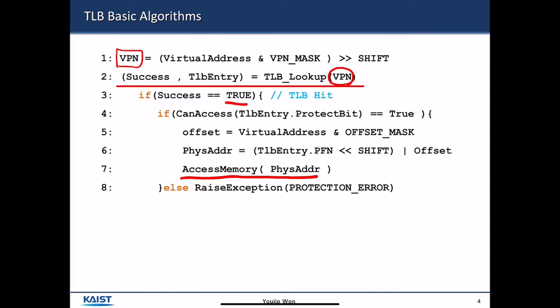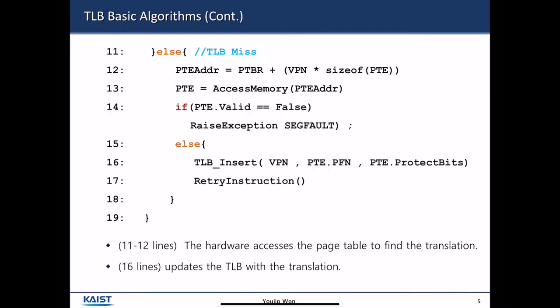If it cannot find the associated entry in the TLB, then it accesses the page table. It contains the address of the page table entry and obtains the page table entry from the page table. Then it checks whether a given page is valid or not. If it's not valid, it raises an exception. Otherwise, it inserts the given page table entry into the TLB and retries the access instruction again. This retry is important.